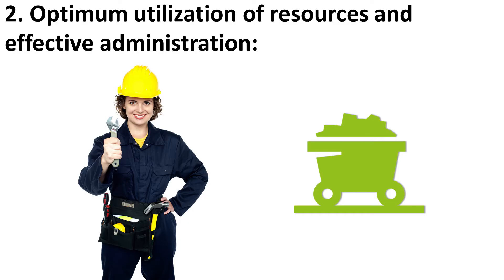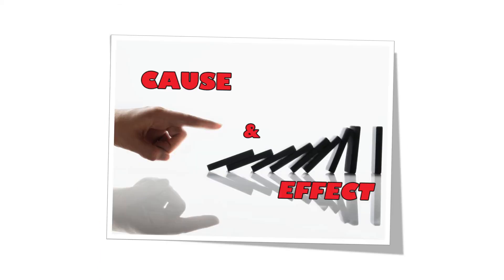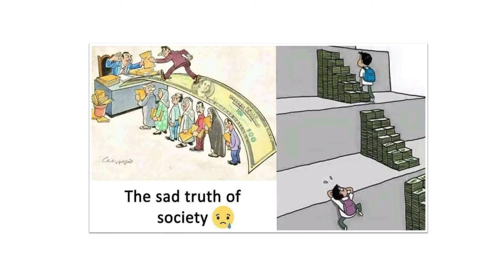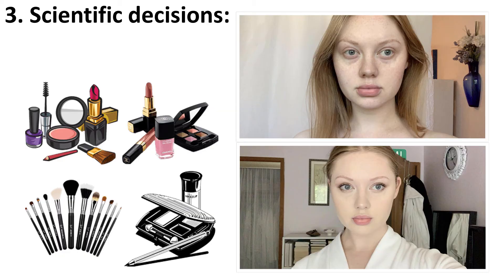The second point is optimum utilization of resources and effective administration. Human and material resources available at companies are limited, so managers should use them optimally. Principles allow managers to predict the cause and effect relationship of their decisions and actions. This helps reduce trial and error concepts, and management principles limit managerial choice so that decisions are free from unfair, imbalanced, or one-sided outcomes.